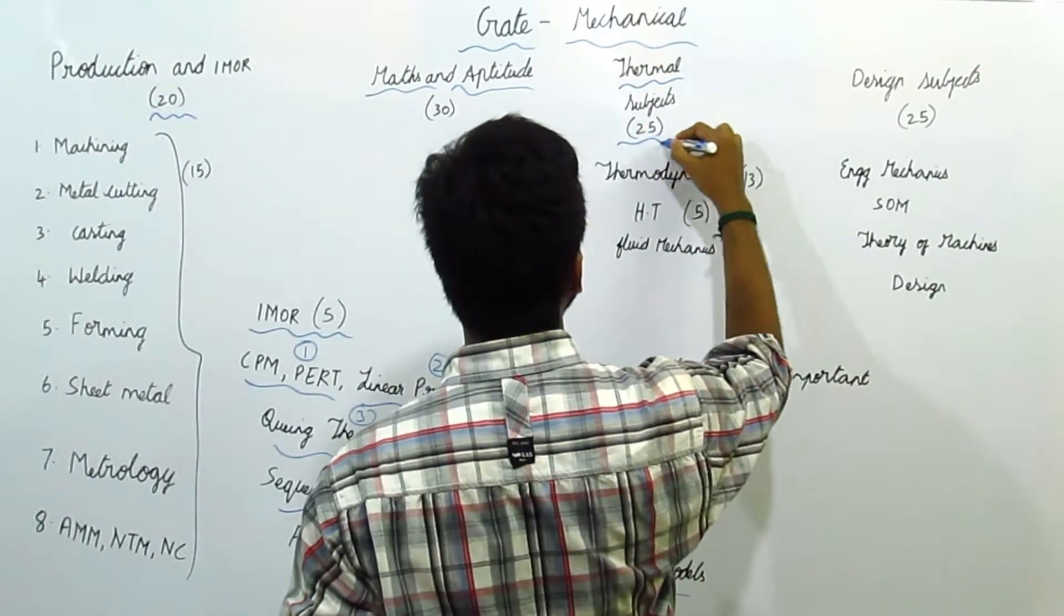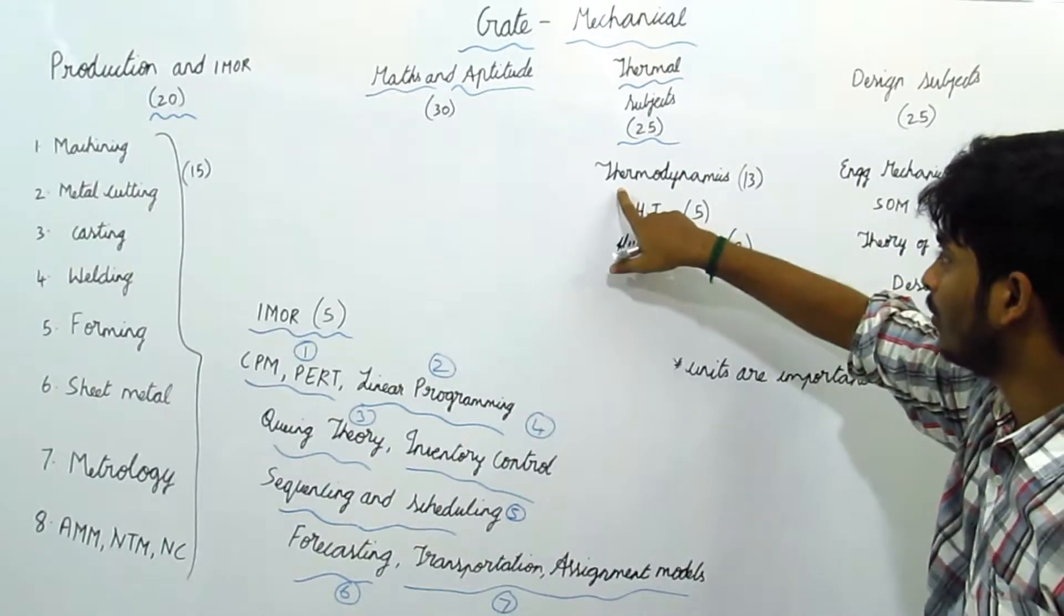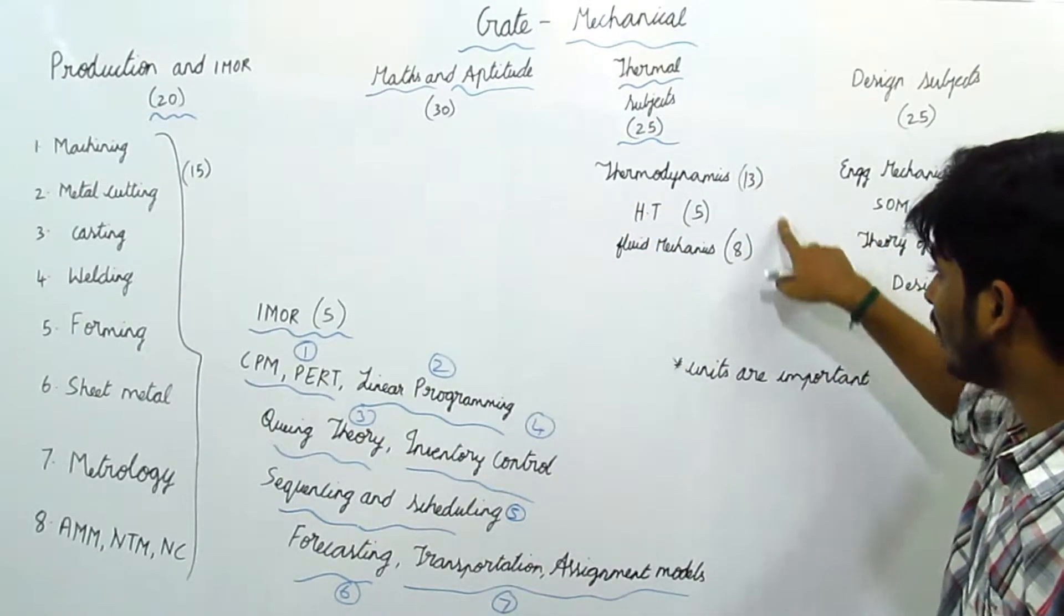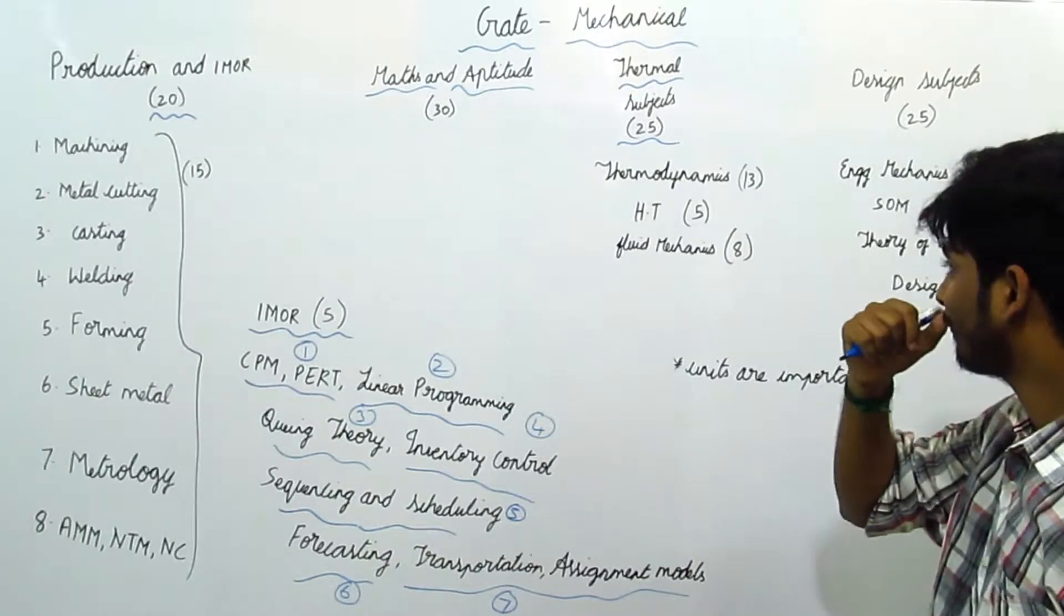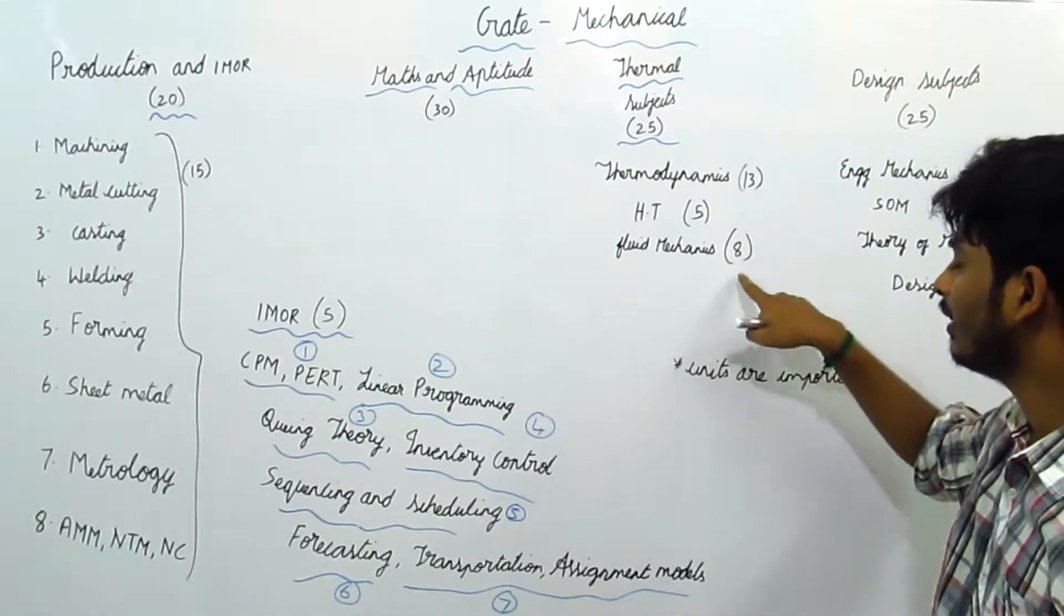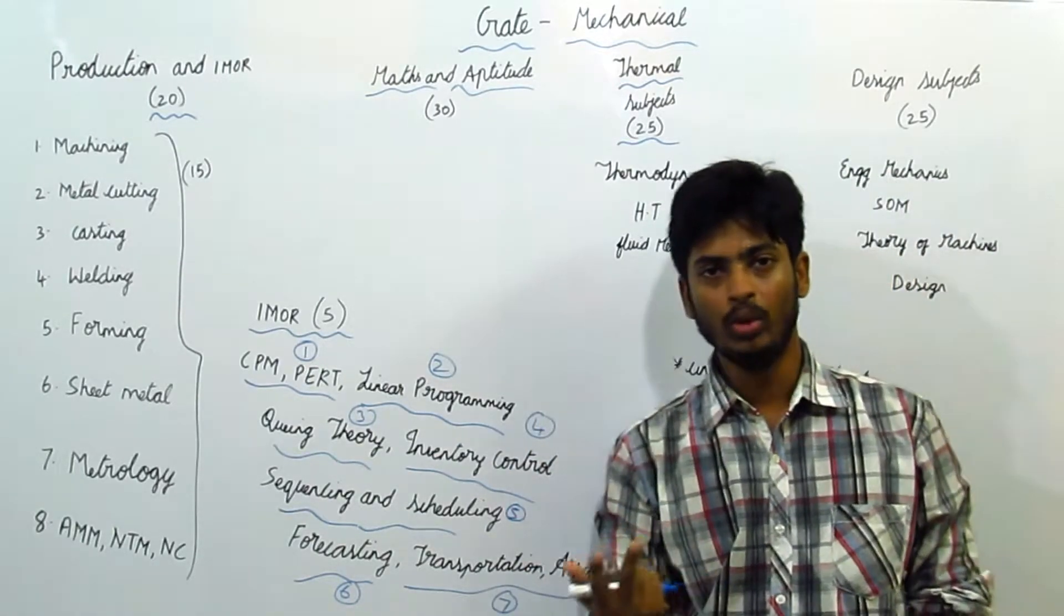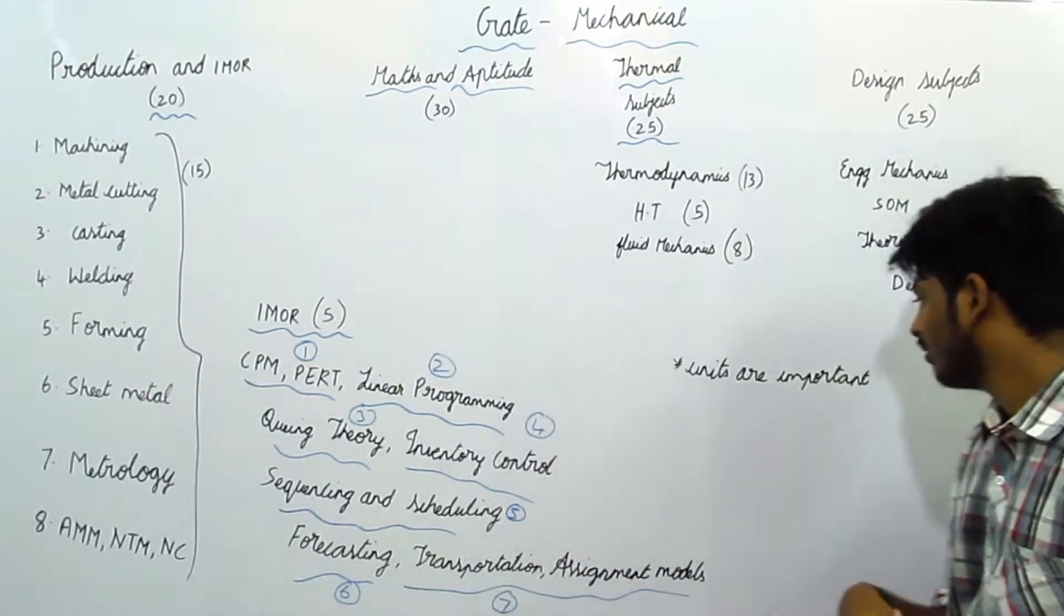Next, comes to thermal subjects. For thermal subjects, they will ask 25 marks. That is, thermodynamics, heat transfer, and fluid mechanics combined to form 25 marks. From thermodynamics 13, heat transfer 5, fluid mechanics 8. Marks for different subjects may vary 2 to 3 marks.